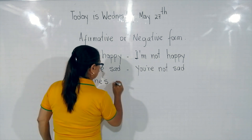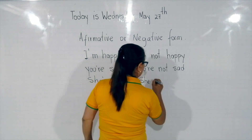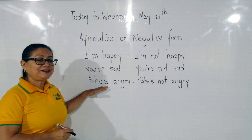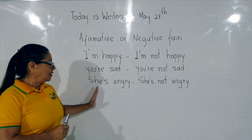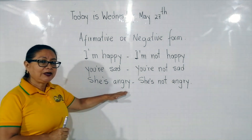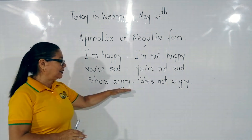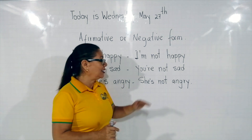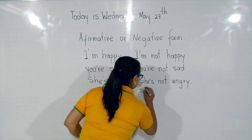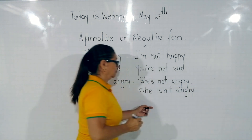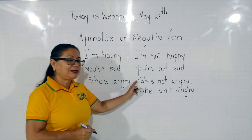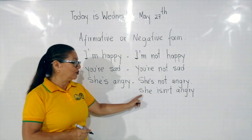Clap, clap, clap your hands. Stomp, stomp, stomp your feet. Repeat: 'She's angry.' She's — es ella. Angry — es enojada. Estamos afirmando que ella está enojada: 'She's angry.' También podemos expresarlo de manera negativa: 'She's not angry' o 'She isn't angry.' Si tú la ves en algún texto de esta manera o de esta manera, estamos hablando de lo mismo.